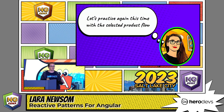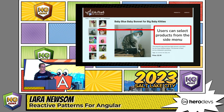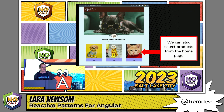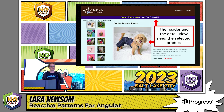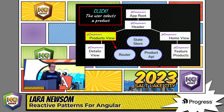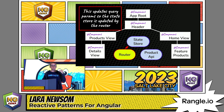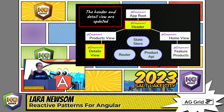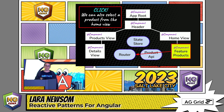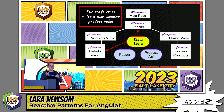Let's practice one more time with the selected product flow. Users can select products from the side menu or from the home page, and both the header and the detail view need the selected product — two components that need to update at the same time. The flow: clicking from the products view adds a query parameter to the route, the state store listens to the route directly, does its calculation to compose the data, and then the header and detail view get the same data at the same time. The same flow applies from featured products: update the route with a query param, router updates the state store, state store pushes out new products, header and detail update simultaneously.